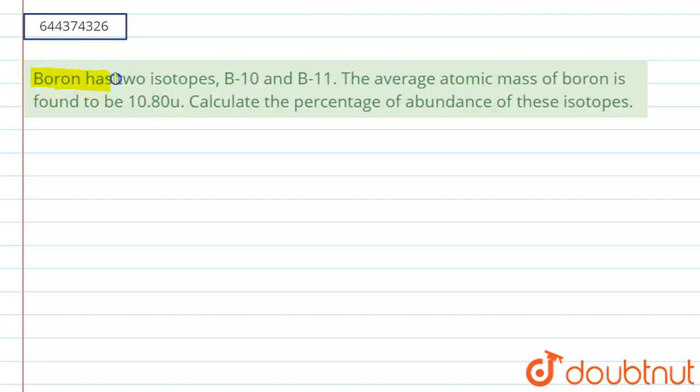It is given boron has two isotopes which is named as B-10 and B-11. The average atomic mass of boron is found to be 10.80. Calculate the percentage abundance of these isotopes. So basically in general we have to...